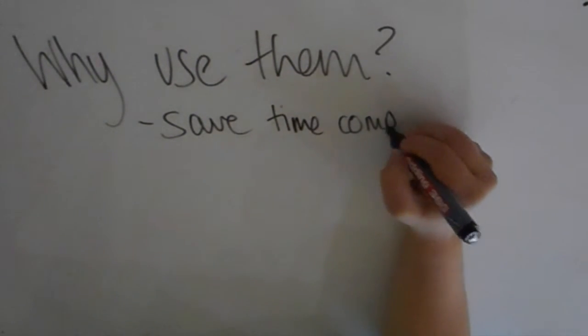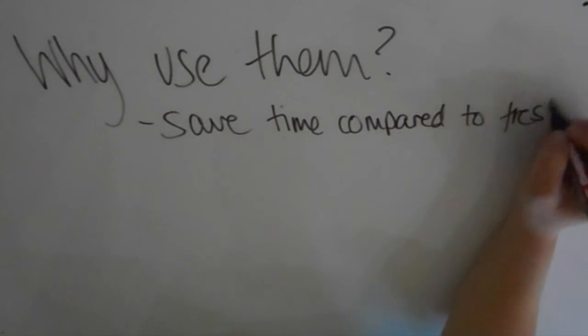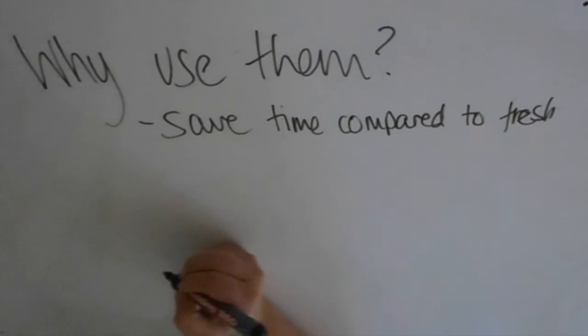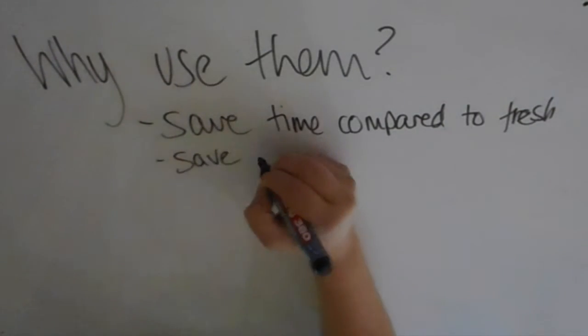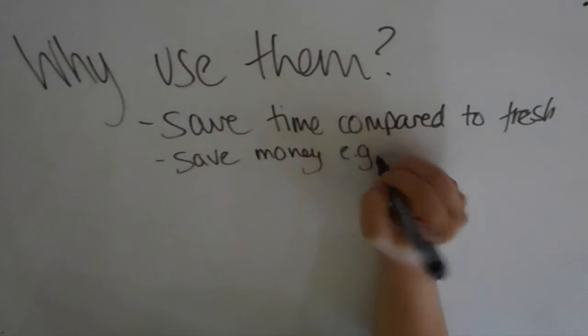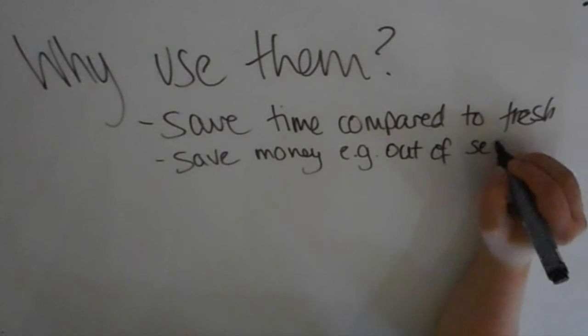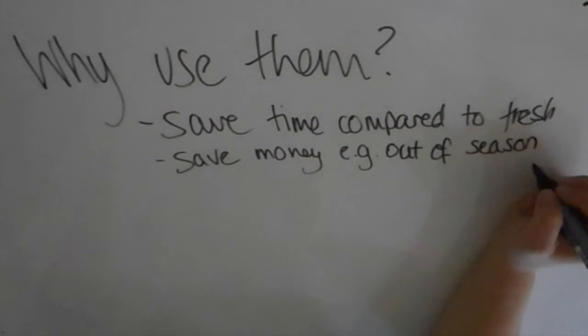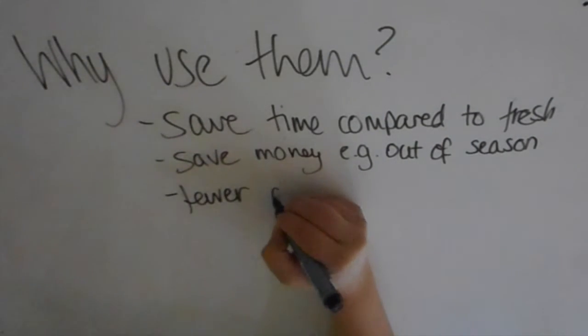First, it saves time in comparison to preparing fresh. For example, ready mashed potatoes are much quicker than boiling and mashing them yourself. You can also save money if you're using products that are out of season. Like raspberries - you could buy frozen raspberries picked in summertime, so they're good quality, and keep them in the freezer. It's going to be much cheaper than buying them when they're imported out of season.